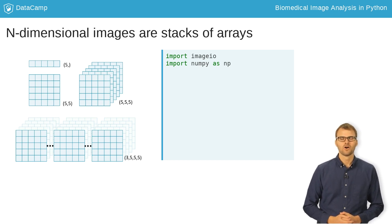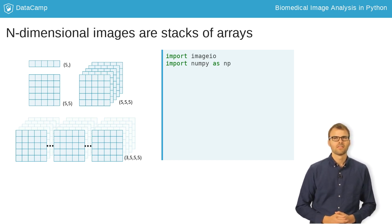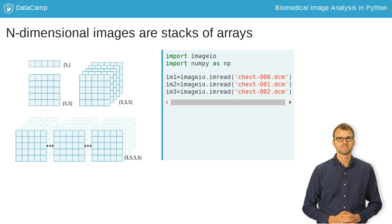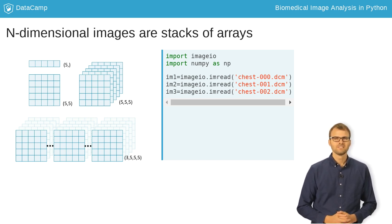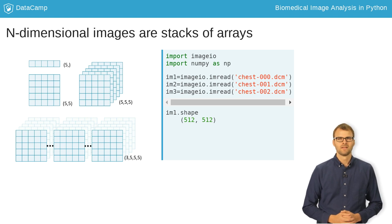First, we'll load ImageIO and NumPy. Then, we'll read in three slices of a chest CT scan. Each of these slices is an array with 512 row elements by 512 column elements.